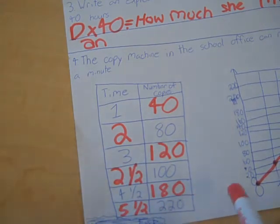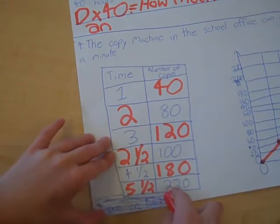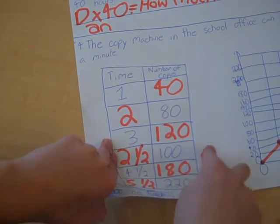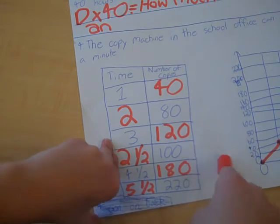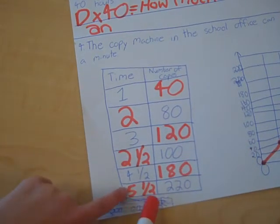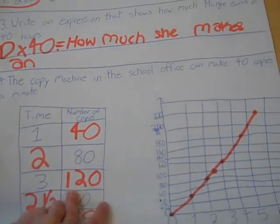And 180 plus 40 is 220. So you would add, that would be 1. And 220 minus 180 would be 40 minutes, so you would need to add 1 more minute to 4.5, and that would be 5.5. And here we made a graph of the answer.